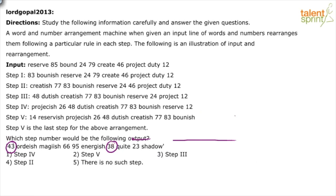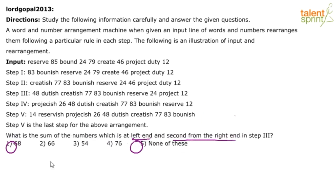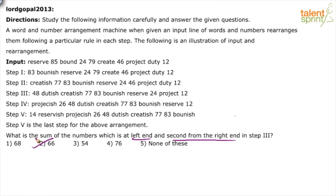Wait — re-reading the question, 'second from the right end' could mean 23, not 38. So it is 43 plus 23 equals 66. Checking the options, 66 is available. The left end number is 43, second from the right end is 23, and their sum is 66 — that is the answer.